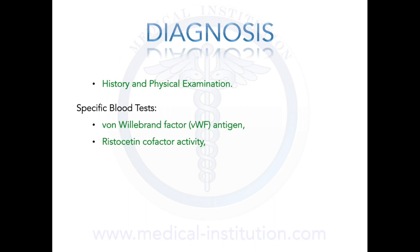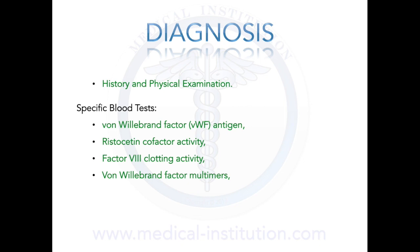We can do factor 8 clotting activity, which is very important because you need von Willebrand factors to stabilize coagulation factor 8, and if you don't have von Willebrand factors, you're going to lose the stability of factor 8. We can also do von Willebrand factor multimers, which evaluates the specific structure of von Willebrand factors in the patient's blood, and platelet function tests, which measure how efficiently platelets are functioning.